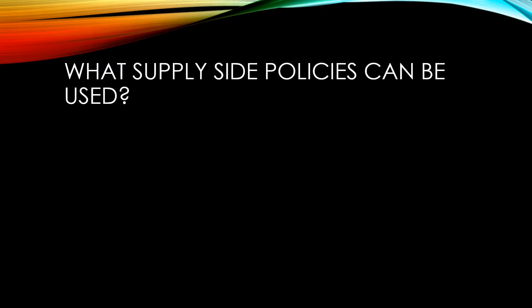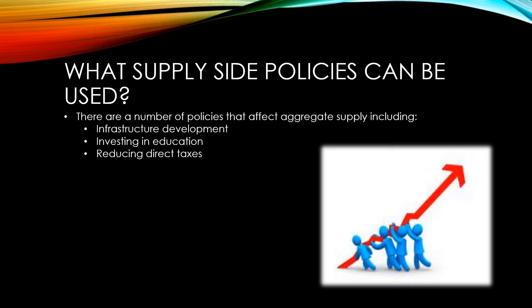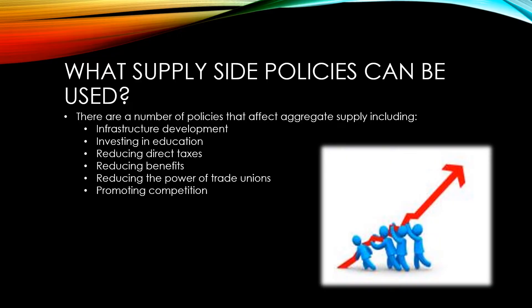There are a number of policies that affect aggregate supply. These include infrastructure development, investing in education, reducing direct taxes, reducing benefits, reducing the power of trade unions, promoting competition and privatisation. We're going to take a look at each of these in more detail.